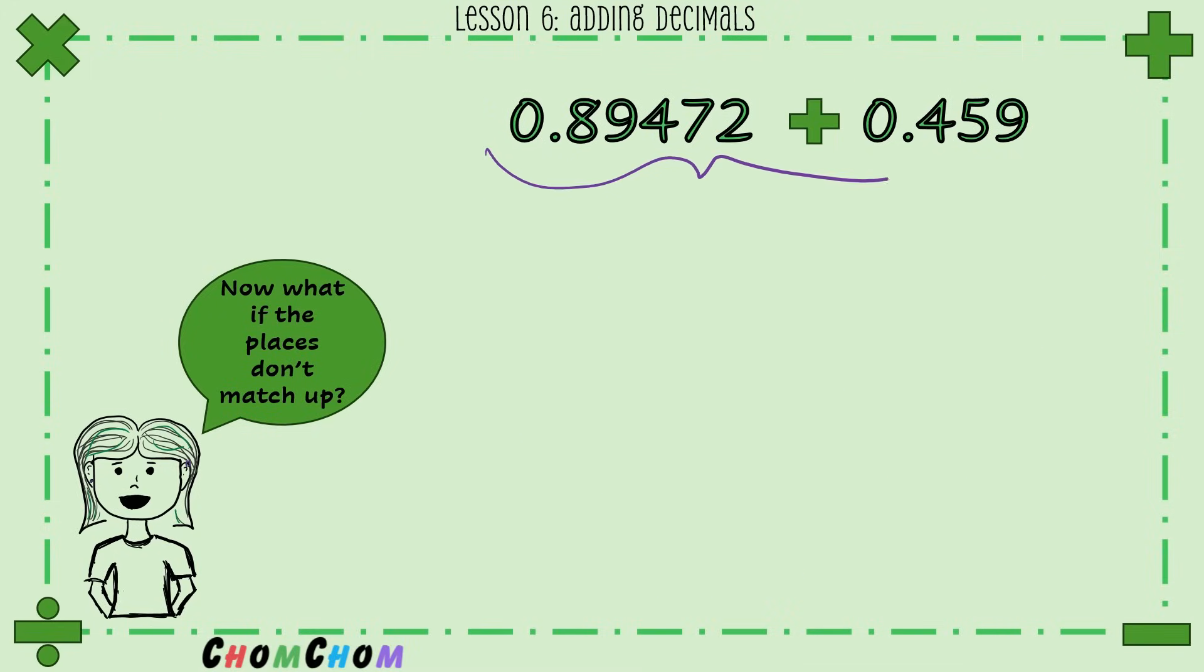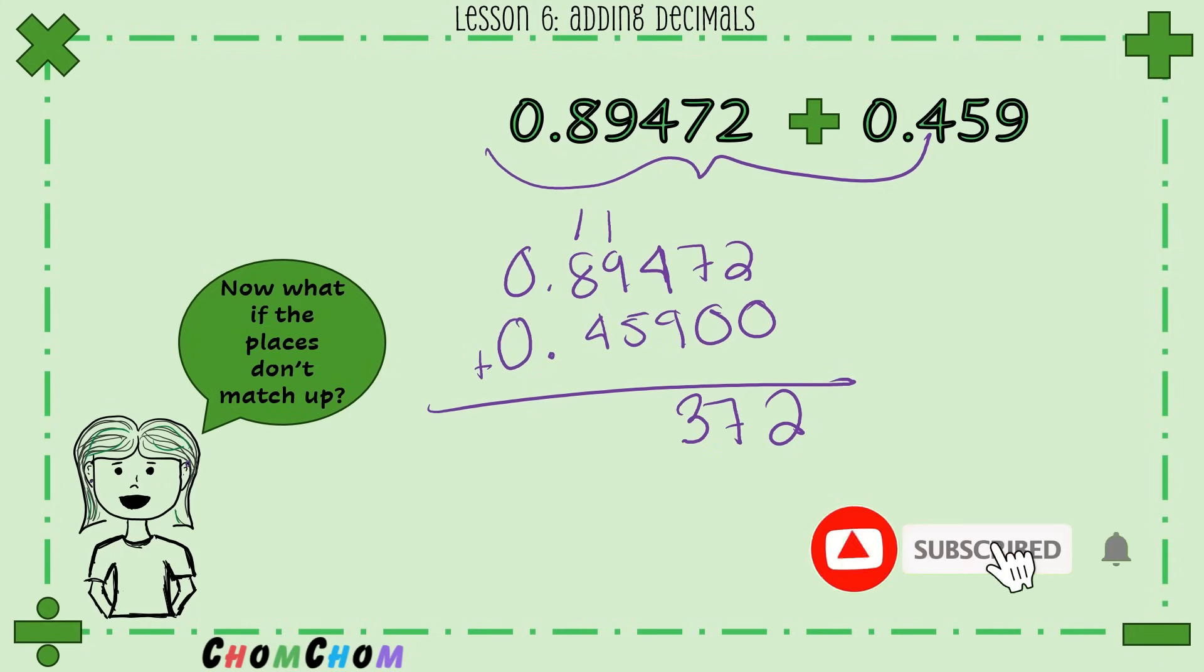Now what if the places don't actually match up? What do we do then? We use our good old placeholder zeros. So we say 0.89472 and then 0.45900 done. And then we add down. So 2 plus 0 is 2, 7 plus 0 is 7, 4 plus 9 is 13 and we carry the one. So then we have 9 plus 1 is 10, and then the 5 comes down. Then we have 9 plus 4 which is 13.